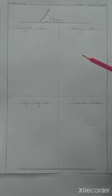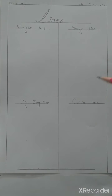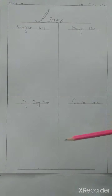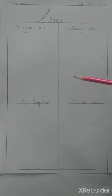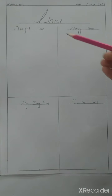Students, different lines are used in drawing — such as straight line, wavy line, zigzag line, and curve line. Besides these, other different lines are also used, but we will learn to draw these four lines. Students, divide your copy page into four parts.